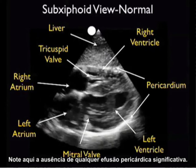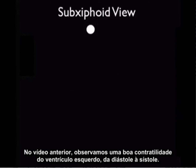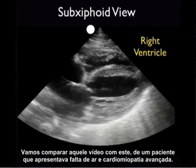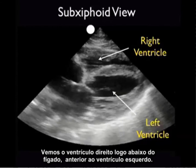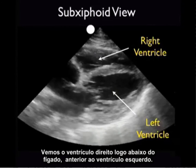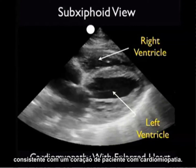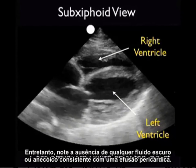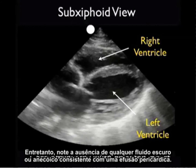Note the absence of any significant pericardial effusion. In that last video clip, we noted good contractility of the left ventricle from diastole to systole. Let's contrast that clip to this one from a patient who presented with shortness of breath and advanced cardiomyopathy. We see the right ventricle just below the liver, anterior to the left ventricle. What we see here is a poorly contracting and dilated left ventricle consistent with a cardiomyopathy heart. However, note the absence of any significant dark or anechoic fluid collections consistent with a pericardial effusion.